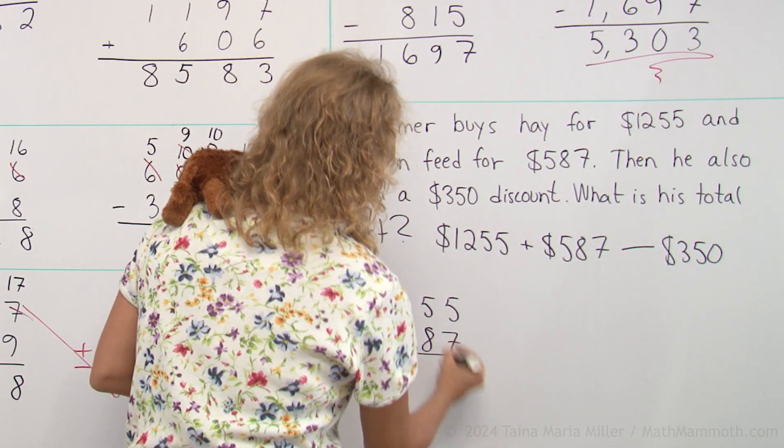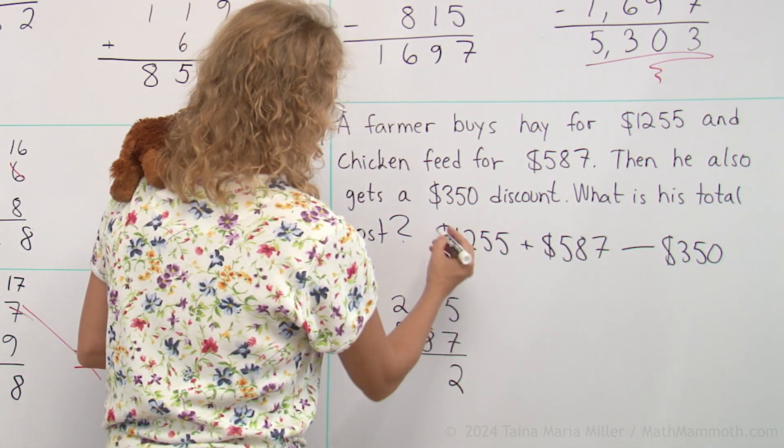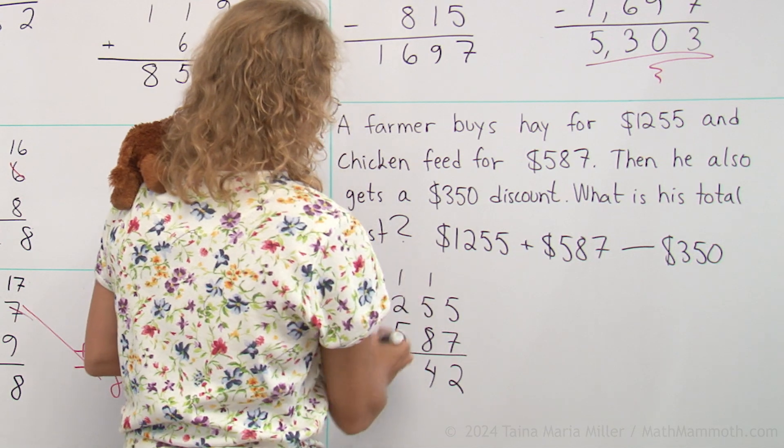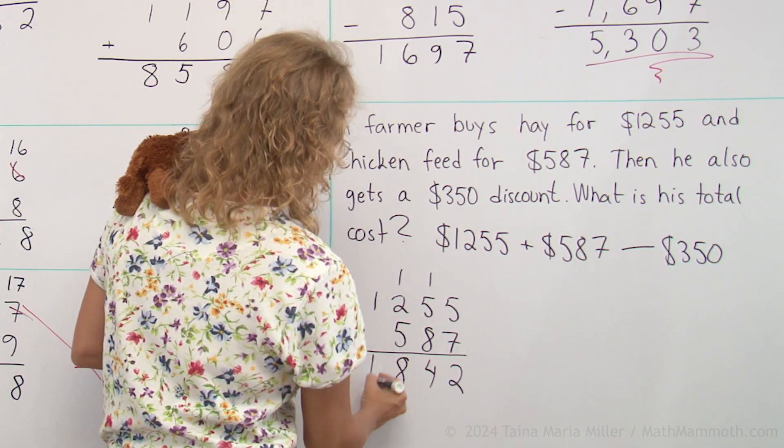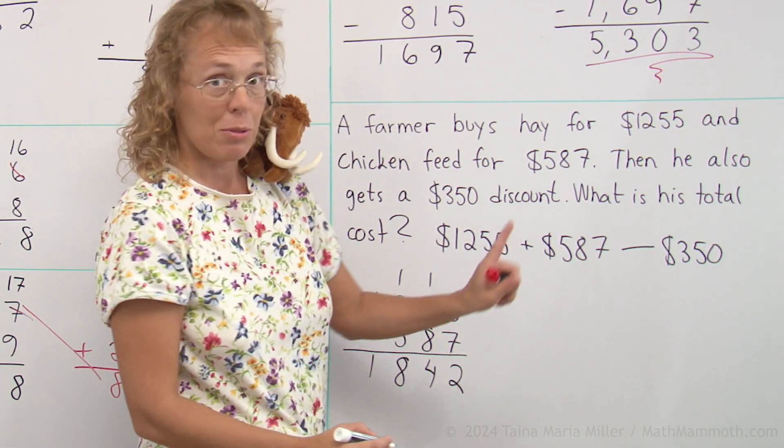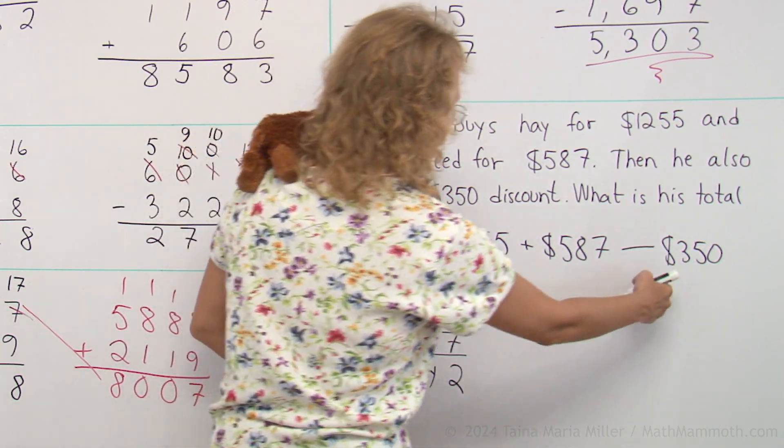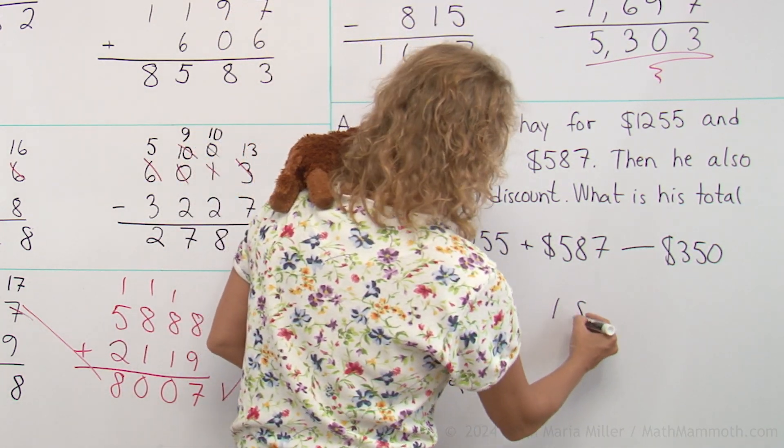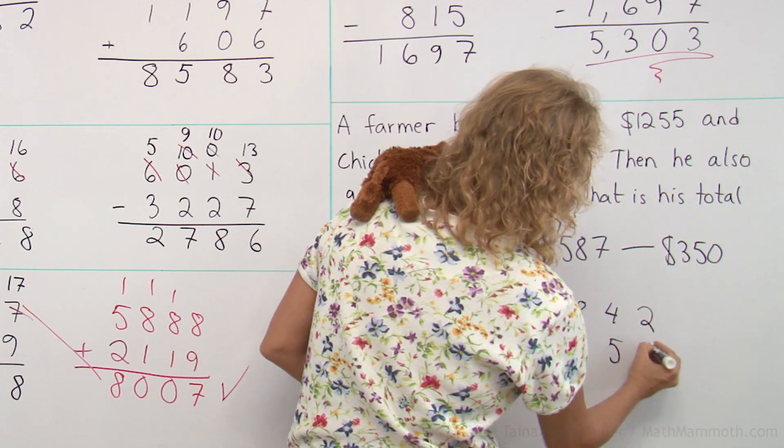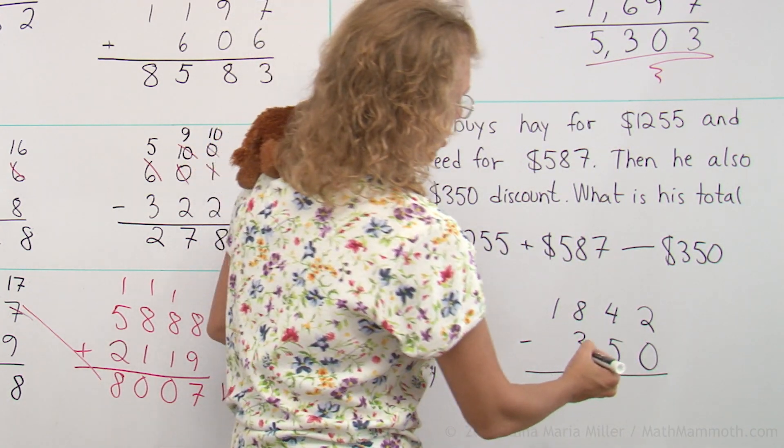Five plus seven is 12. Then here we have 13 and 1, 14. And here 8. And here 1. And now we subtract from this number, 350.